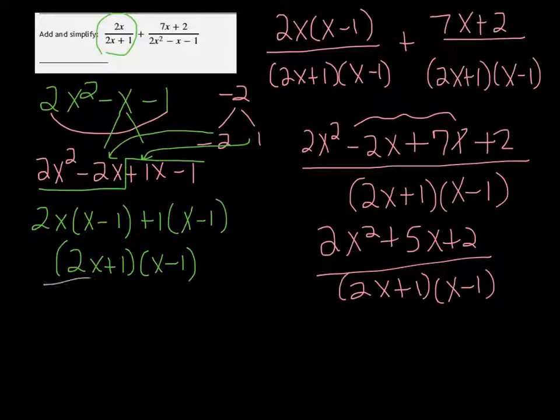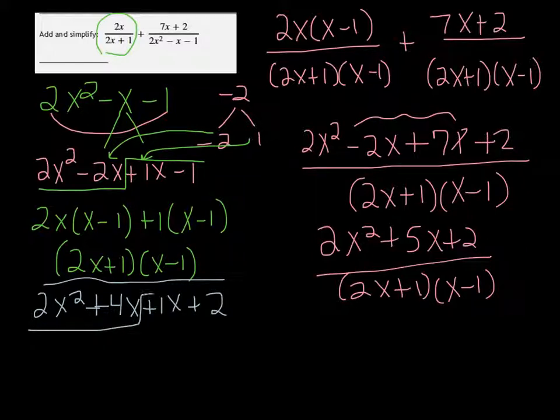So over here, I'm going to write it as 2x squared plus 4x plus 1x plus 2. You can see that 4 and 1 are the same as 5, so you're not really changing it. You're just spreading it out more.